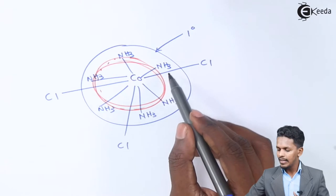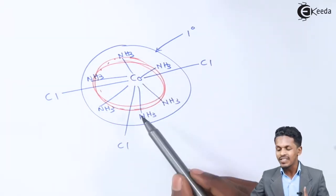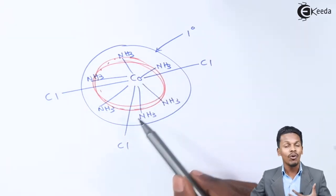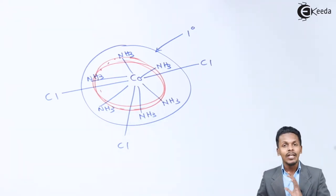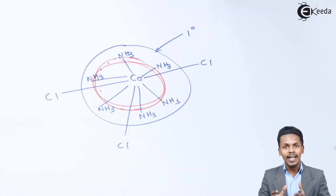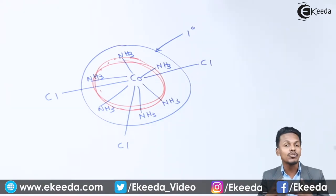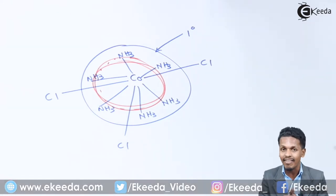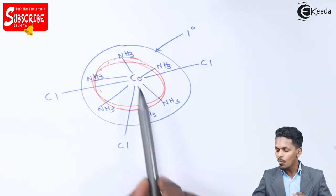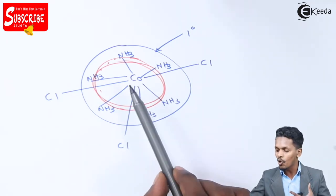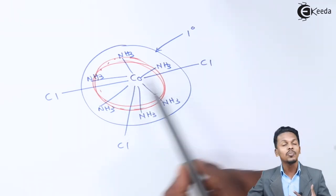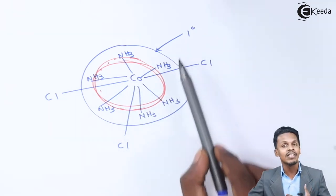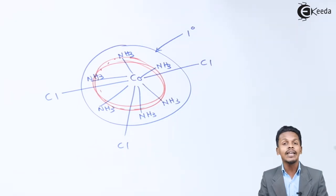These six NH3 groups are present in the secondary sphere, also known as the coordination sphere. Those NH3 groups in the secondary sphere are very strongly associated with the metal, and even if we dissolve the complex in water they won't get ionized easily. The bond between cobalt and NH3 is a coordination covalent bond, while the bond between cobalt and Cl is an ionic bond, which is why it ionizes very easily.